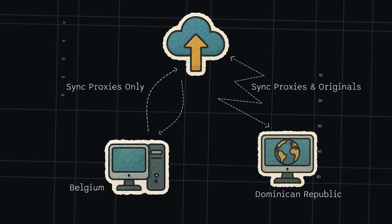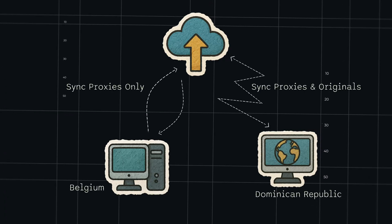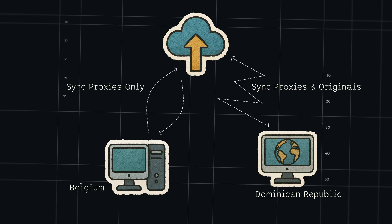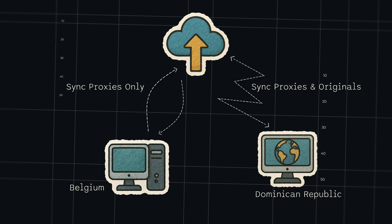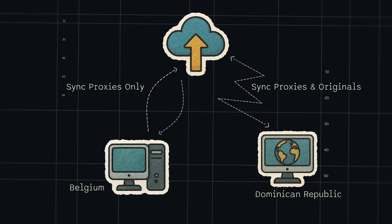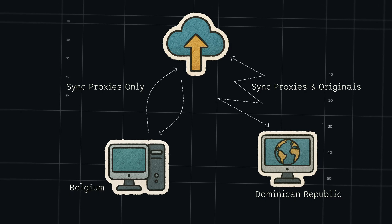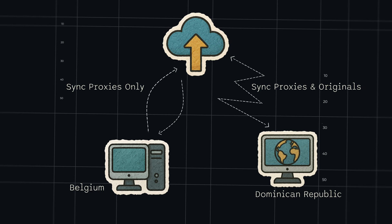Here's an important tip for using the proxies only setting. In the Dominican Republic, when I opened the project on my laptop and it started syncing, it also asked me if I wanted to do proxies only or proxies and originals. At home I chose proxies only, but in the Dominican Republic I chose proxies and originals — because when editing I sometimes add images or music, and I wanted to sync those to the cloud so that when I came back home and wanted to export the project, I'd have those originals of things I added while traveling.